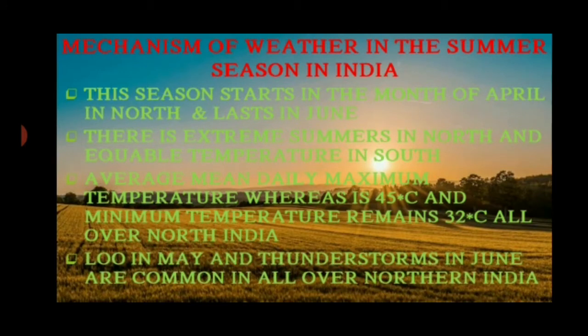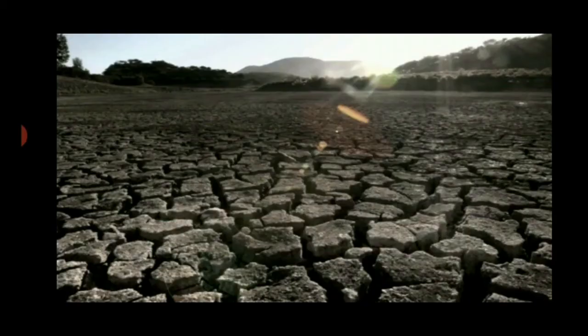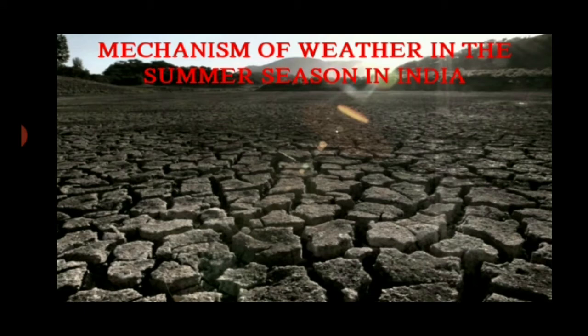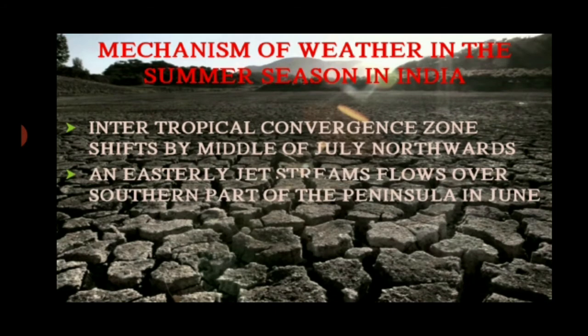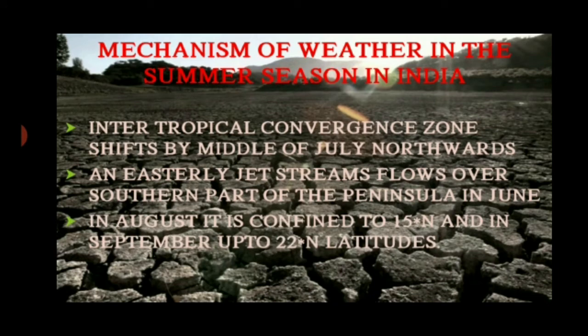Loo winds in May and thunderstorms in June are common all over northern India. The intertropical convergence zone shifts northwards by the middle of July. Easterly jet streams flow over the southern parts of the peninsula in June. In August, the jet stream is confined to 15 degrees north, and in September it moves up to 22 degrees north latitudes.